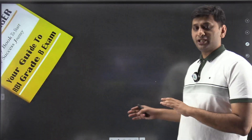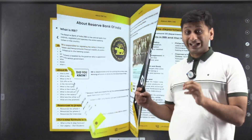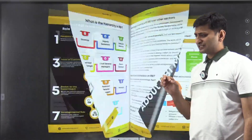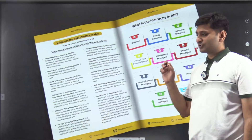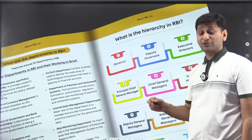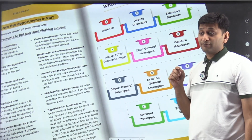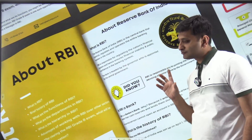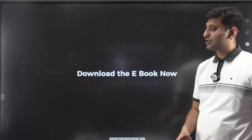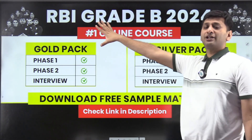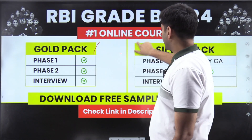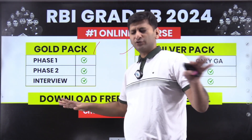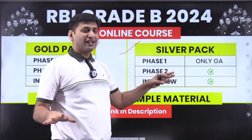EduTap has a free RBI Grade B guidebook available for download via the link in the video description. It contains complete information about the syllabus, previous year questions, and best books and resources for self-preparation. They also offer a Gold Pack — a comprehensive course covering phase one, phase two, and interview — and a Silver Pack for those who need only phase two and current affairs support.